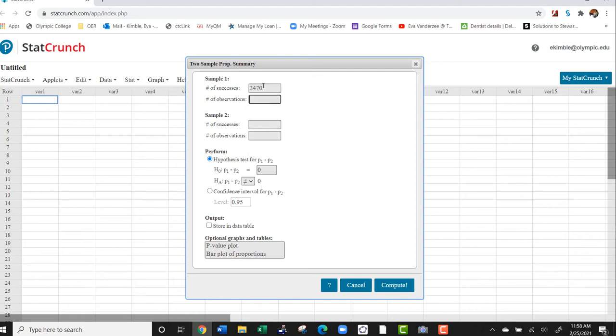So it's going to be 2,470. Number of observations was 3,060. 1,780 and 2,033. When you go down to hypothesis test, you want to make sure that these are the same. So P1 minus P2 is zero. That's always going to be the case. And P1 minus P2 is not equal to zero.